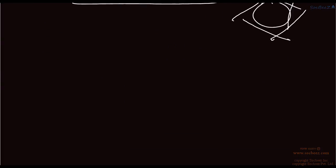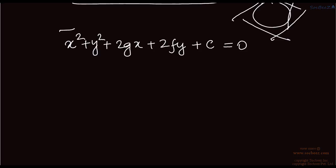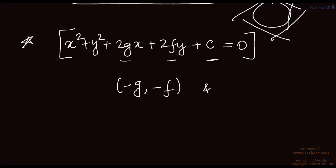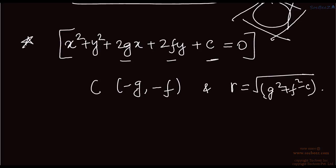The general equation of the circle is x squared plus y squared plus 2gx plus 2fy plus c equals 0. Remember this as it is the most important form. The center of the circle is (minus g, minus f) and the radius is root of g squared plus f squared minus c.